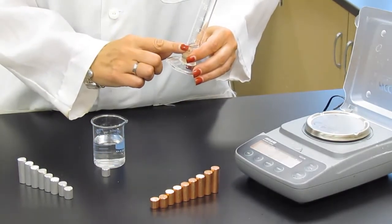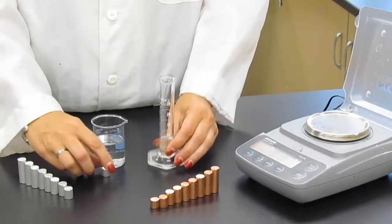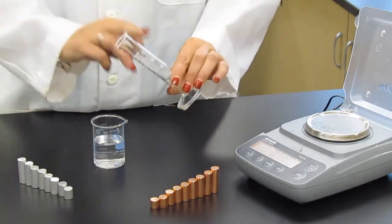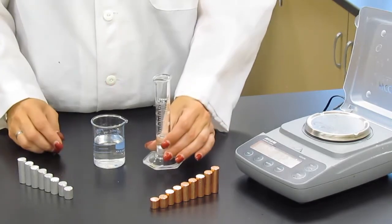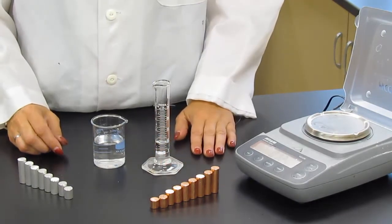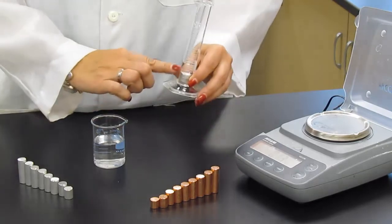Take a reading on your graduated cylinder. Make sure that you take it to the correct number of significant figures. Then carefully add your cylinder. It helps to tip the graduated cylinder on its side as you slide it in. Make sure no water spills out.